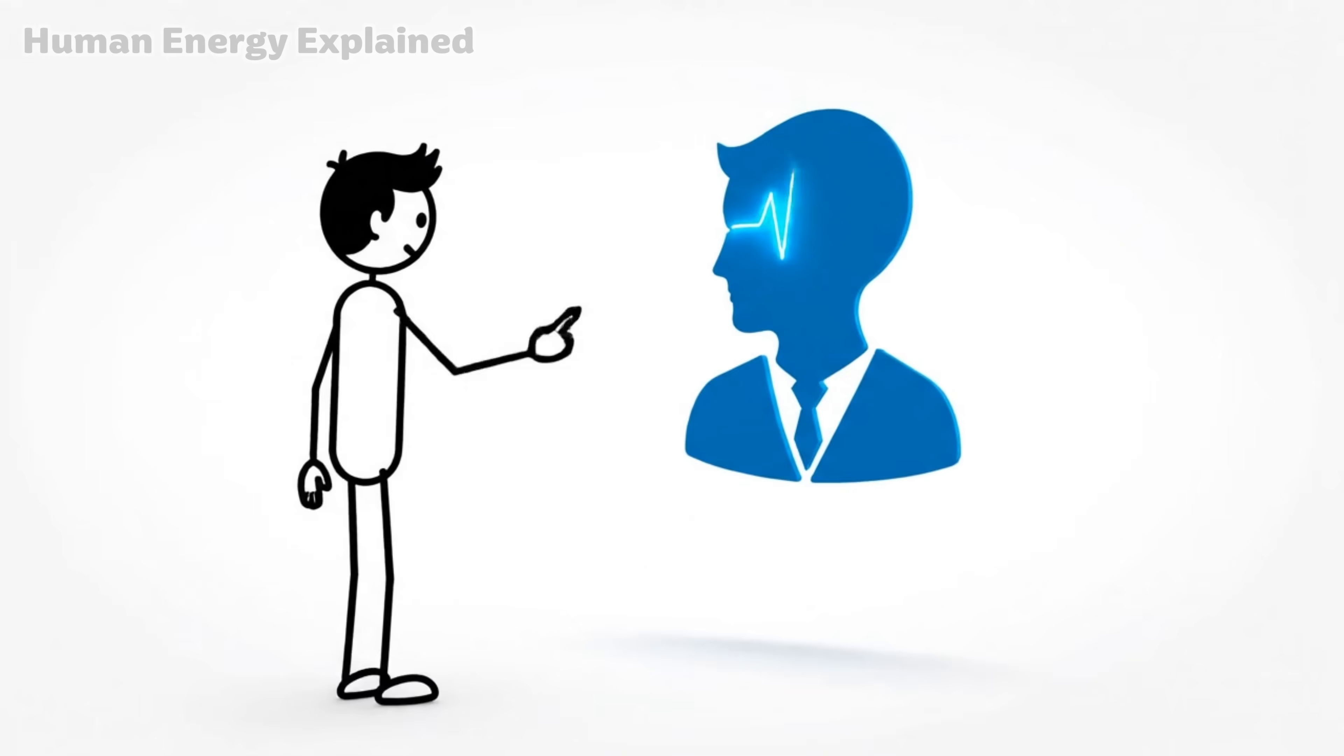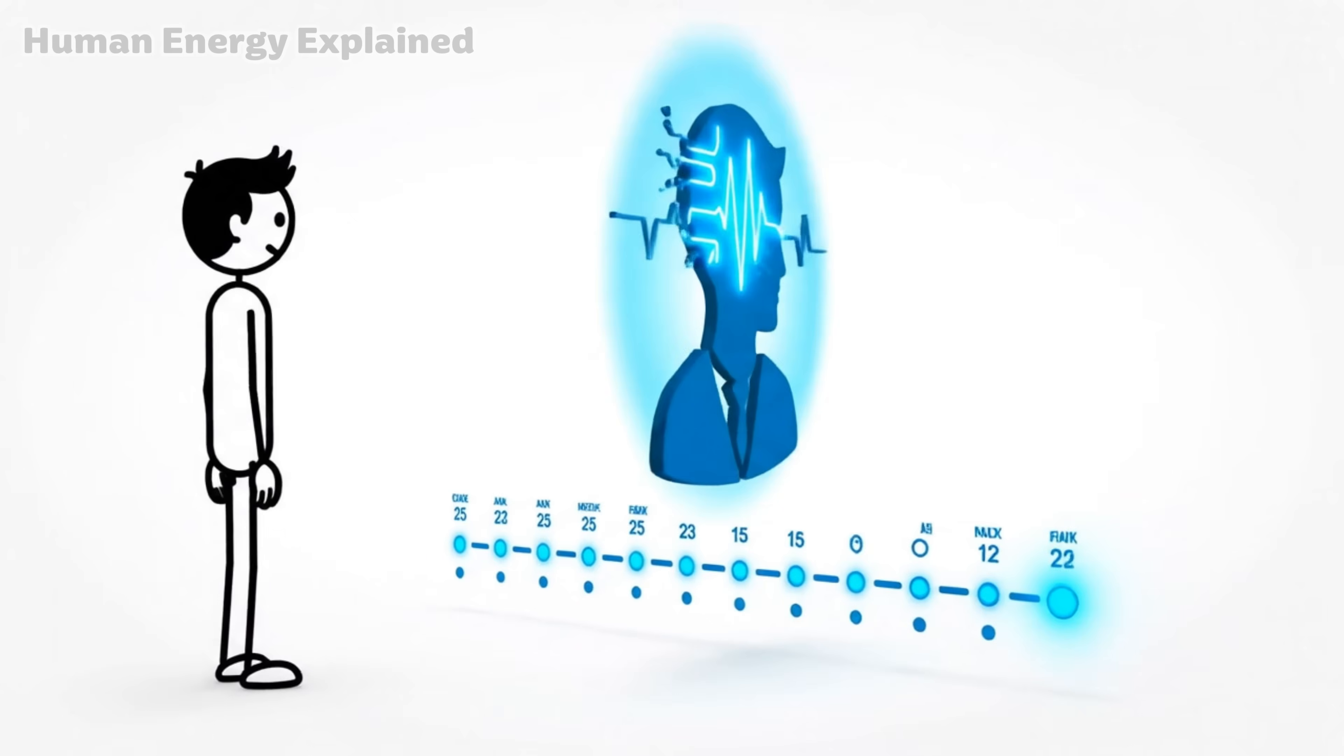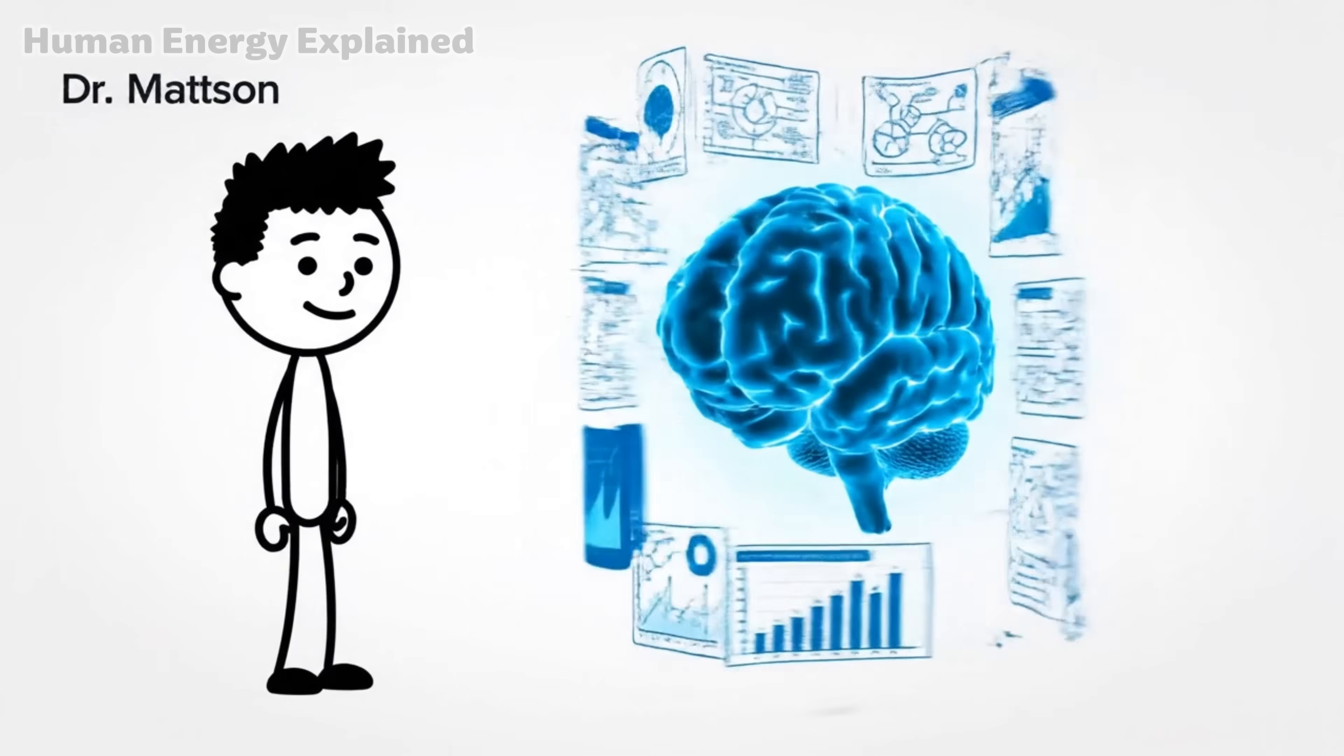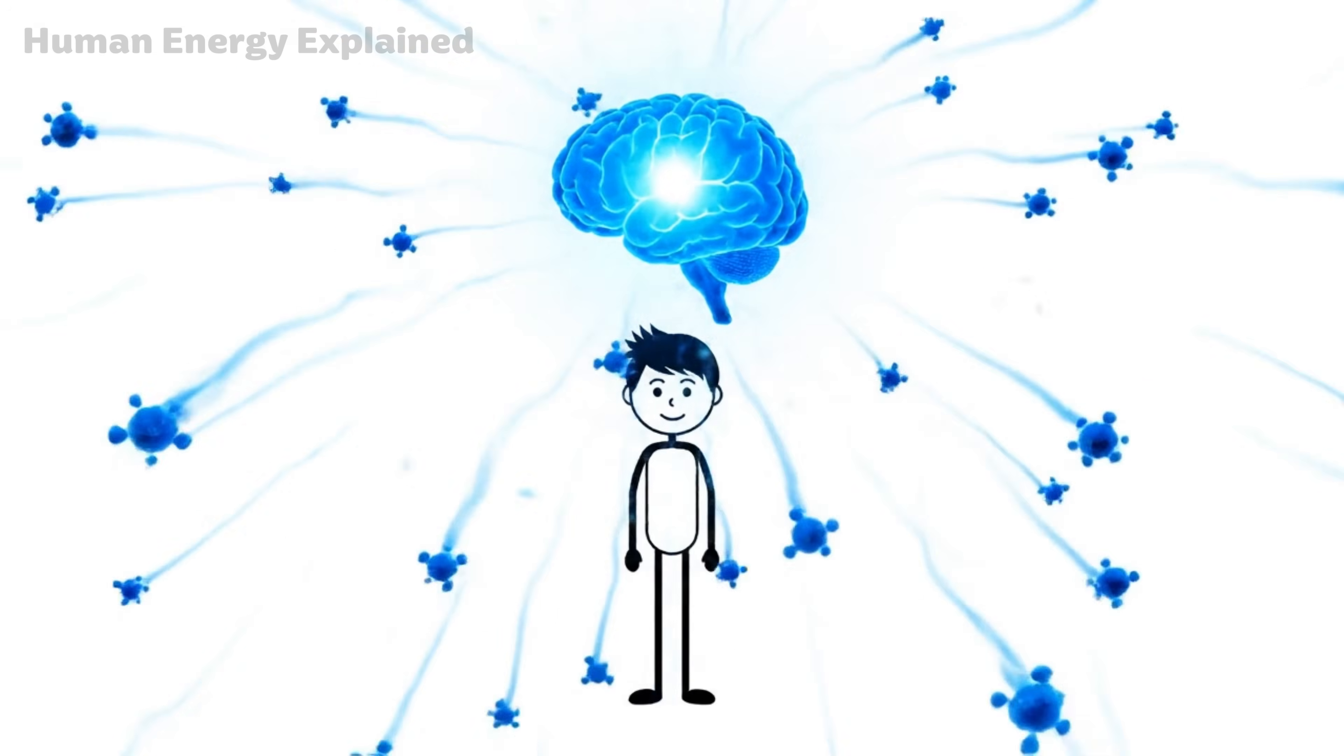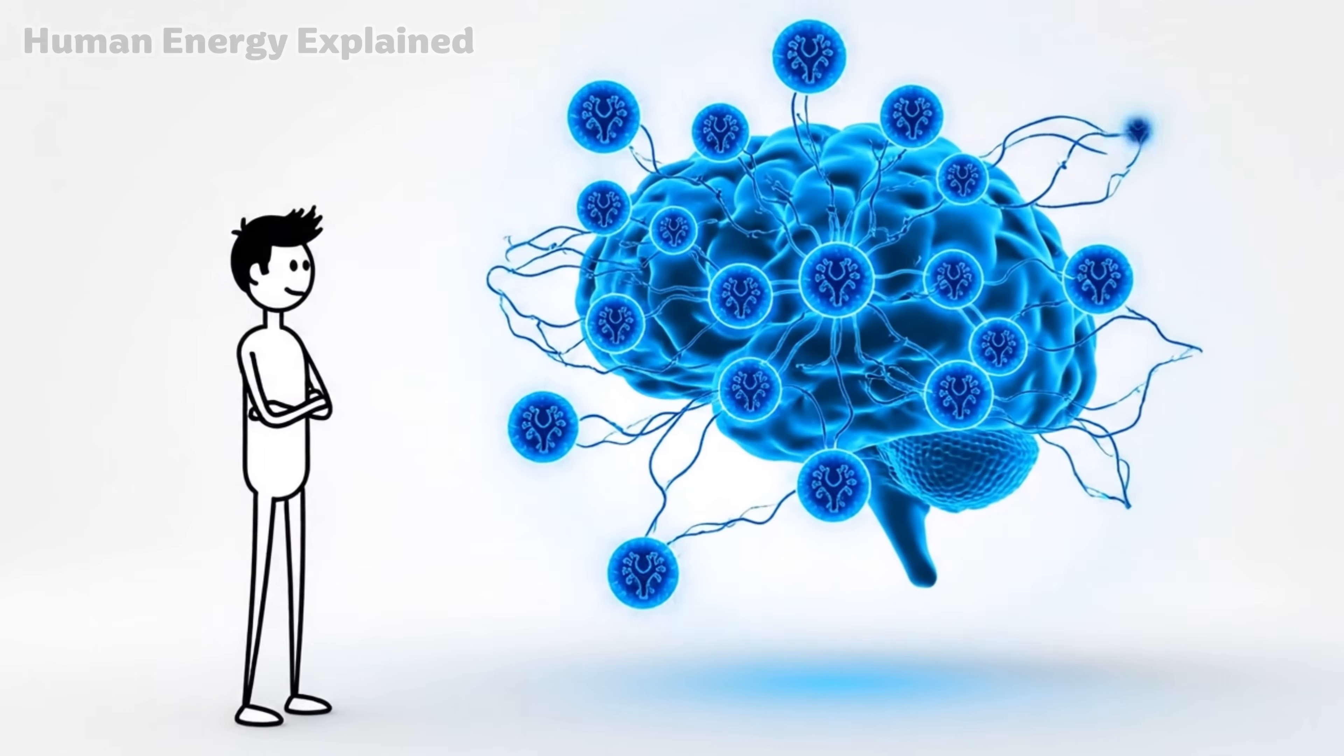Dr. Mark Mattson, a neuroscientist at Johns Hopkins University, spent over 25 years studying exactly this moment. What happens to the brain when we fast? His research revealed something remarkable. Fasting triggers the production of BDNF, brain-derived neurotrophic factor. It's a protein that helps your brain create new neural connections, strengthen existing ones, and protect against degeneration.